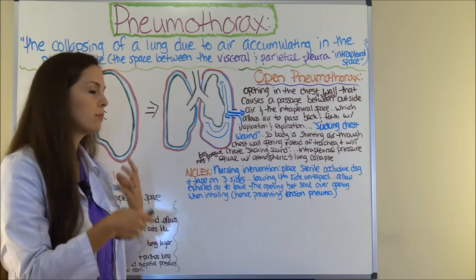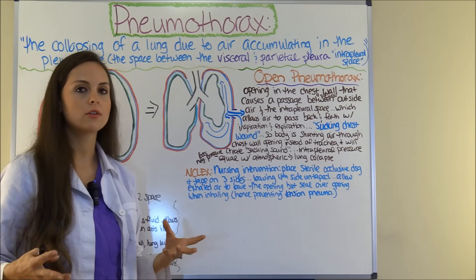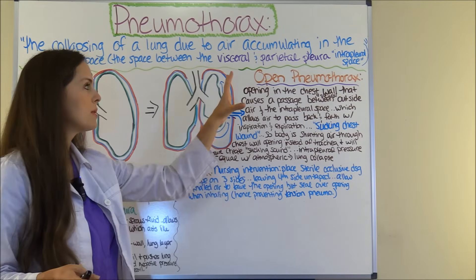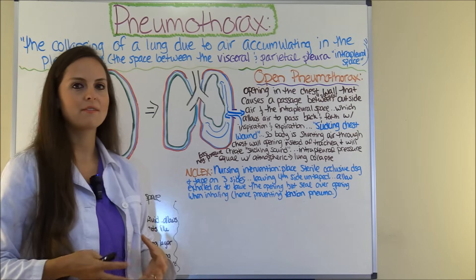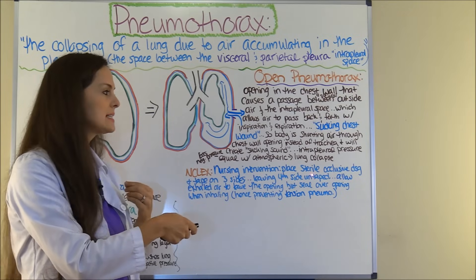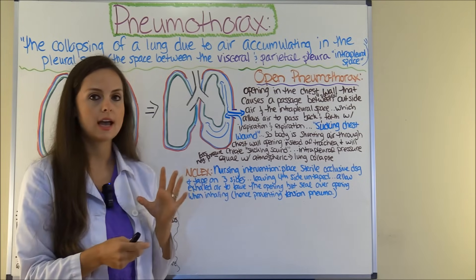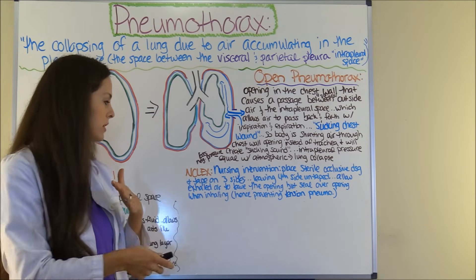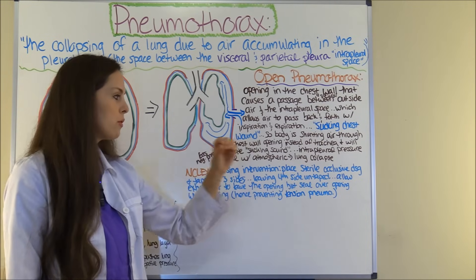NCLEX tip for open pneumothorax: if a patient comes in with a large open chest wound, the nursing intervention is to place a sterile occlusive dressing and tape it on three sides, leaving the fourth side untaped. This allows exhaled air to leave through the opening but seals back over it when the patient is inhaling — which helps prevent a tension pneumothorax.